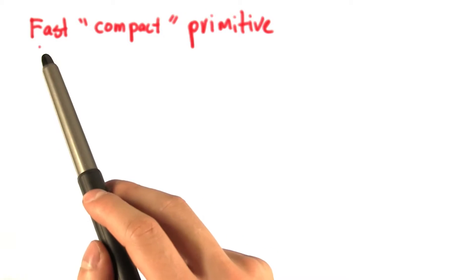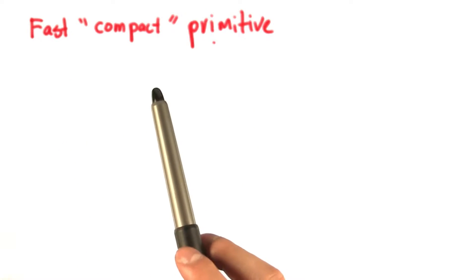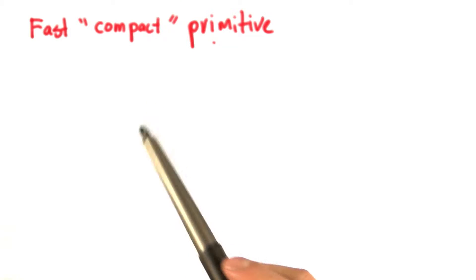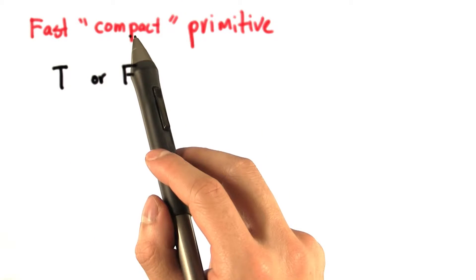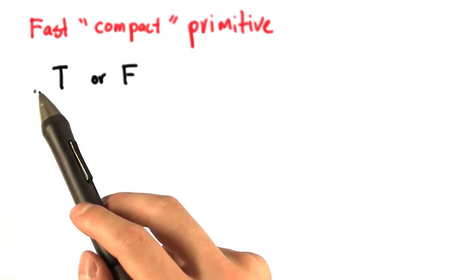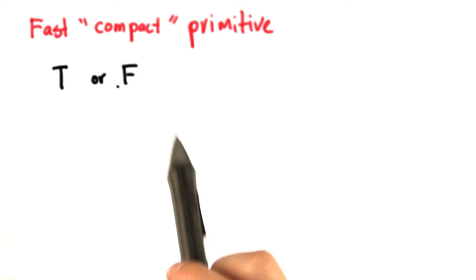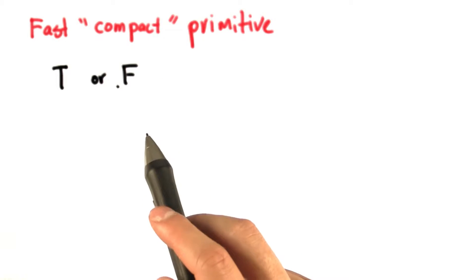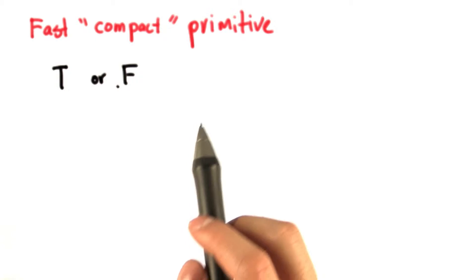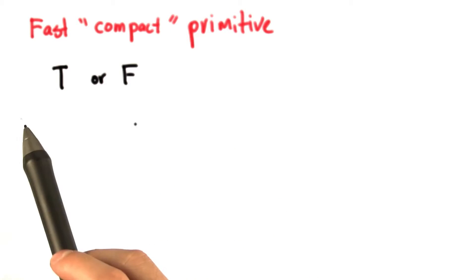Ben would like to implement a fast compact primitive that operates on a single block of data. Recall that compact inputs a true or false flag for every thread and a value for every thread, and outputs only those values which the input flag is true.